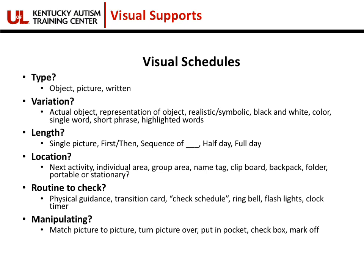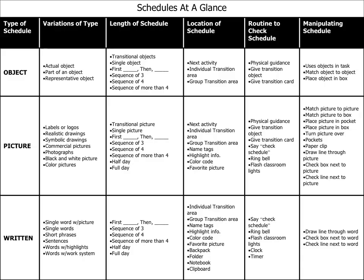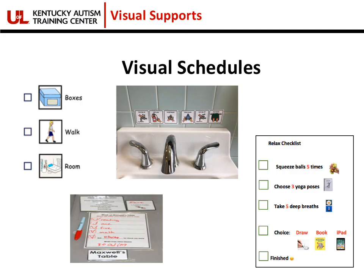In the beginning, students are going to need reminders to go check their schedule — don't say 'check your schedule' right after telling them what to do next, because then there's no need to check it. Students often need verbal or visual prompts to go check their schedule and know what to do next. There are lots of ways to manipulate schedules — matching pictures to pictures, turning pictures over, putting them in a pocket, checking a box, or marking it off. There are many pictures ahead showing different types of visual schedules.